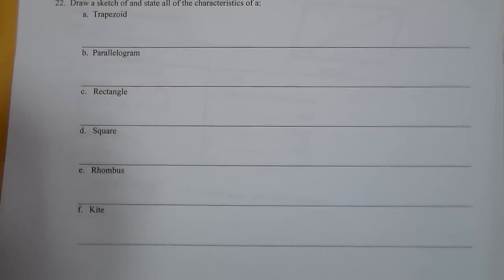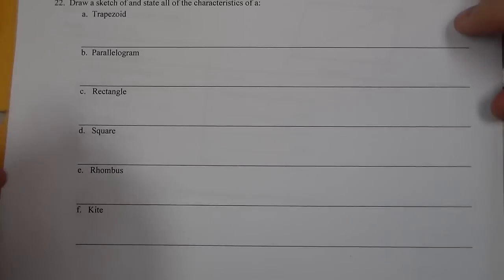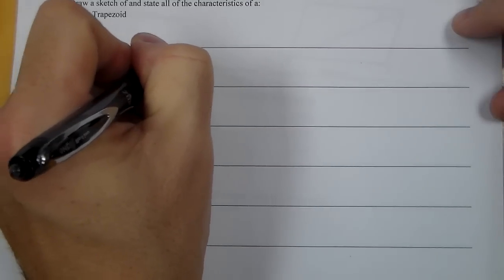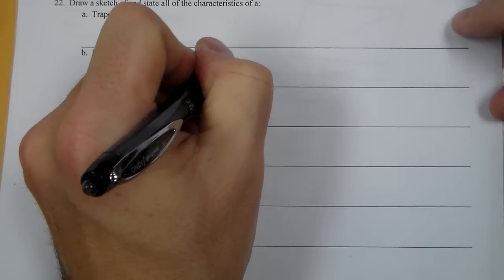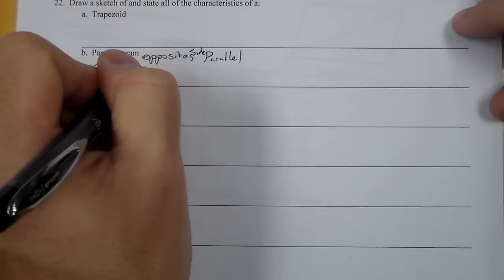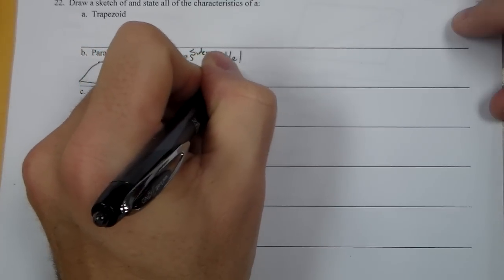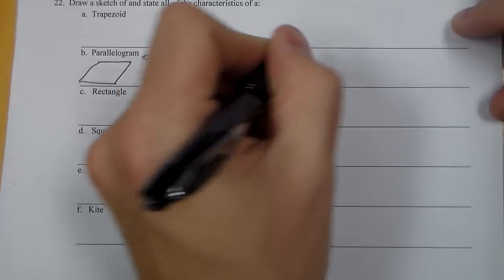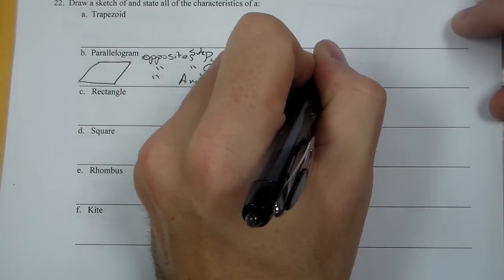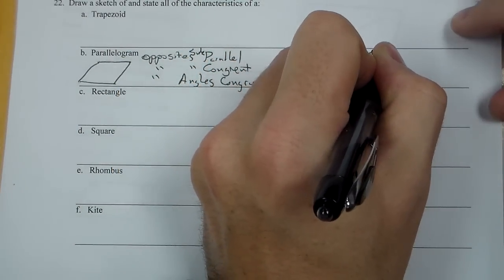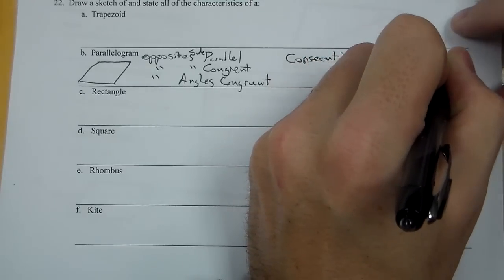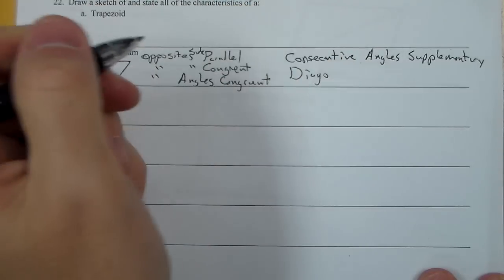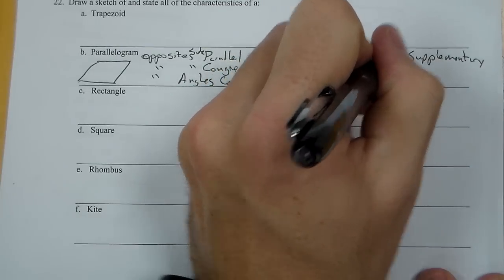So next we have to draw a sketch and state all of the characteristics for our various shapes. I'm going to start kind of at the top of our hierarchy. The first thing we did was a parallelogram. The parallelogram has opposite sides parallel, it has opposite sides congruent, it has opposite angles congruent, it has consecutive angles supplementary, and then the last one is that diagonals bisect each other.